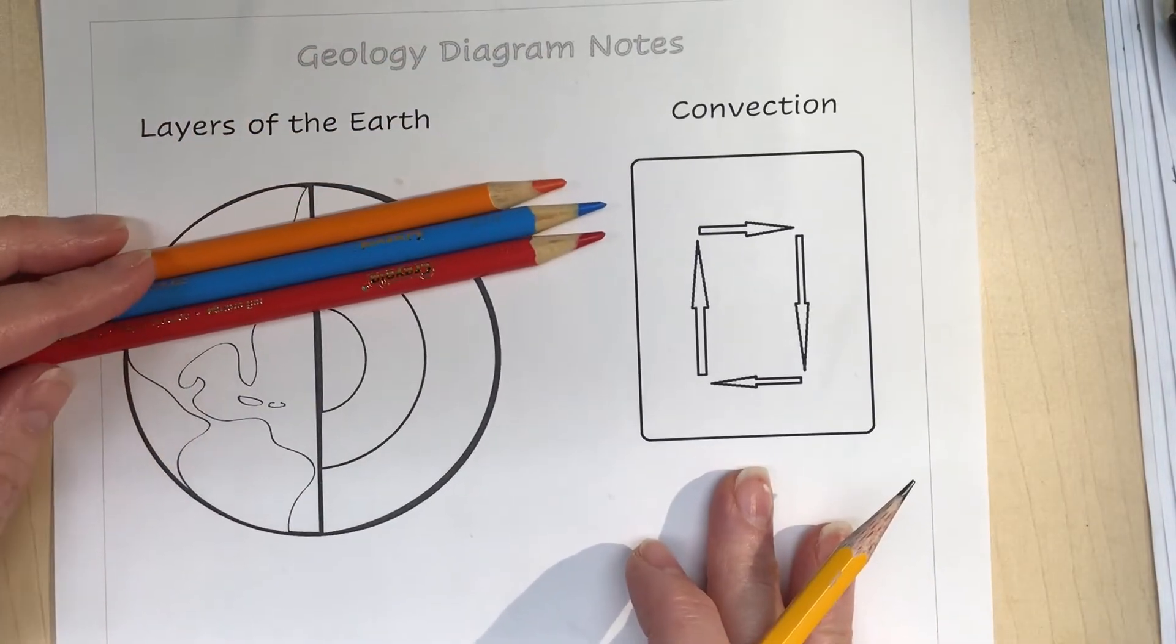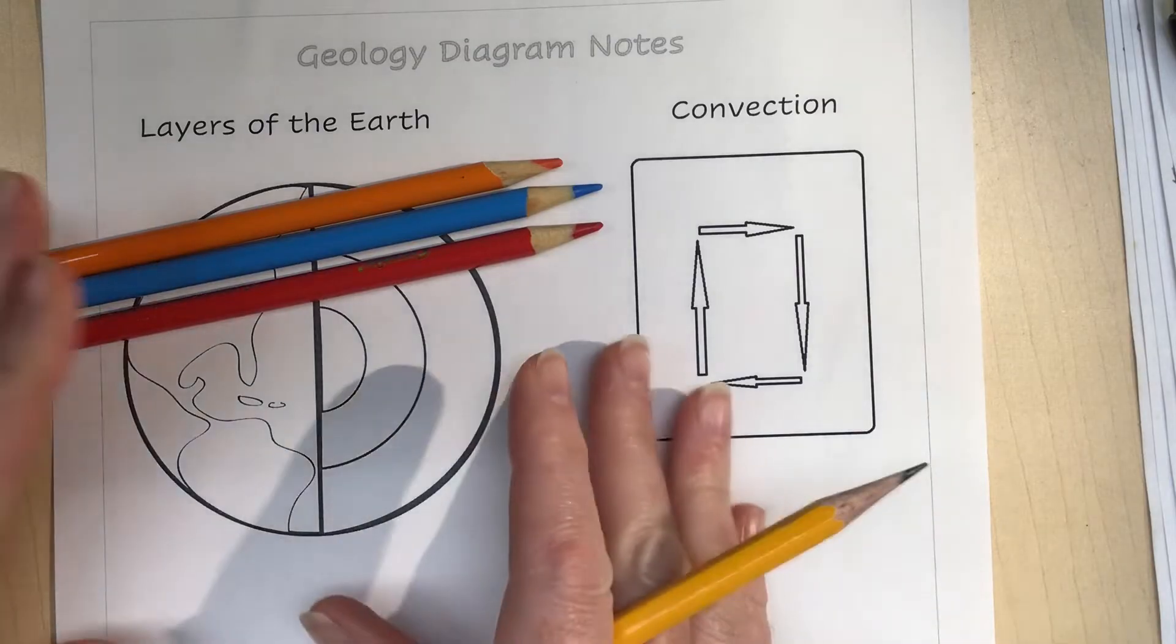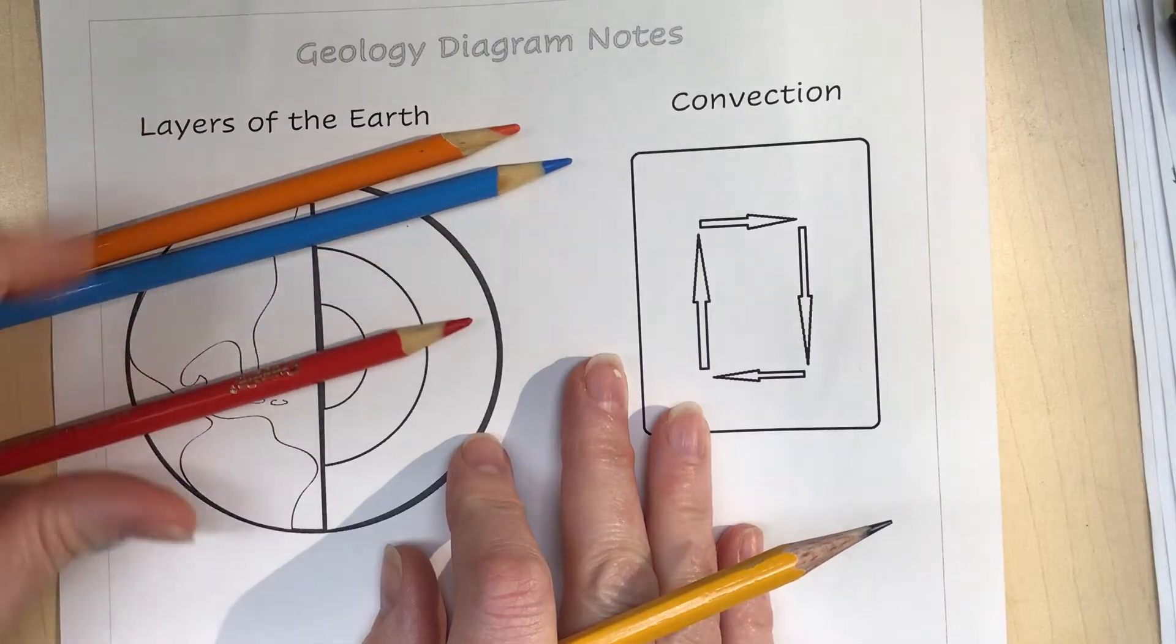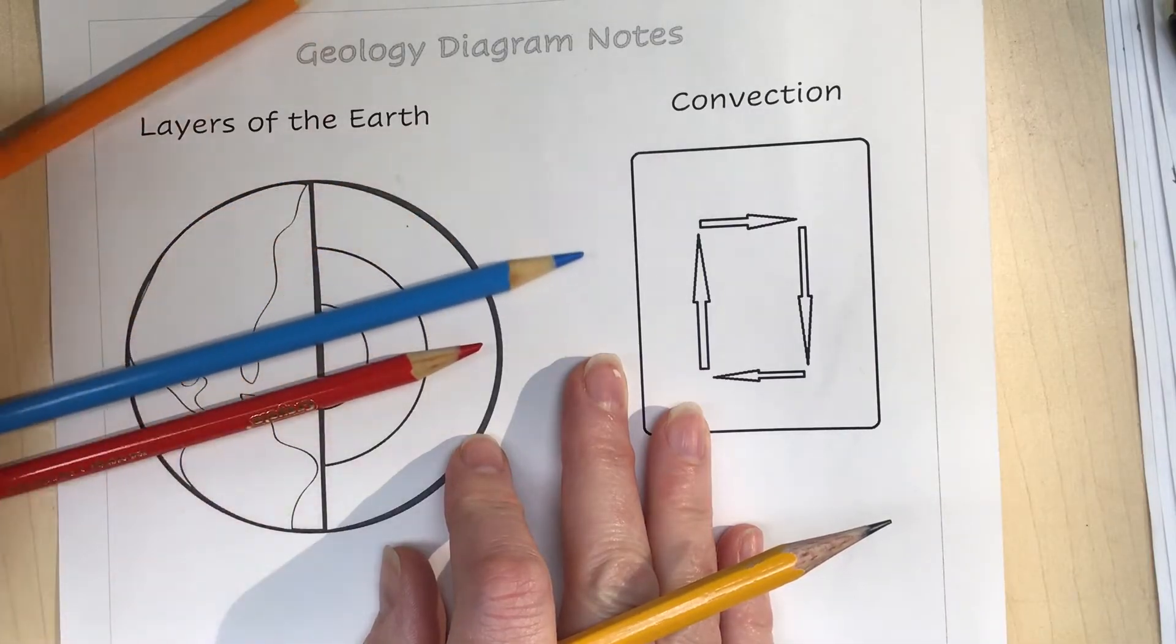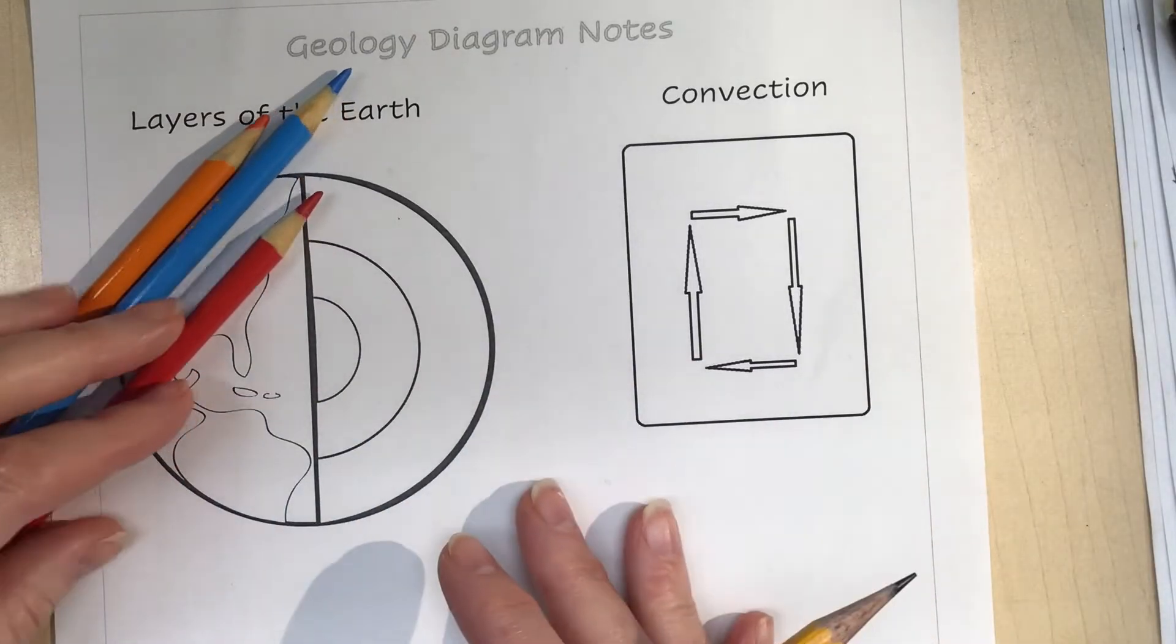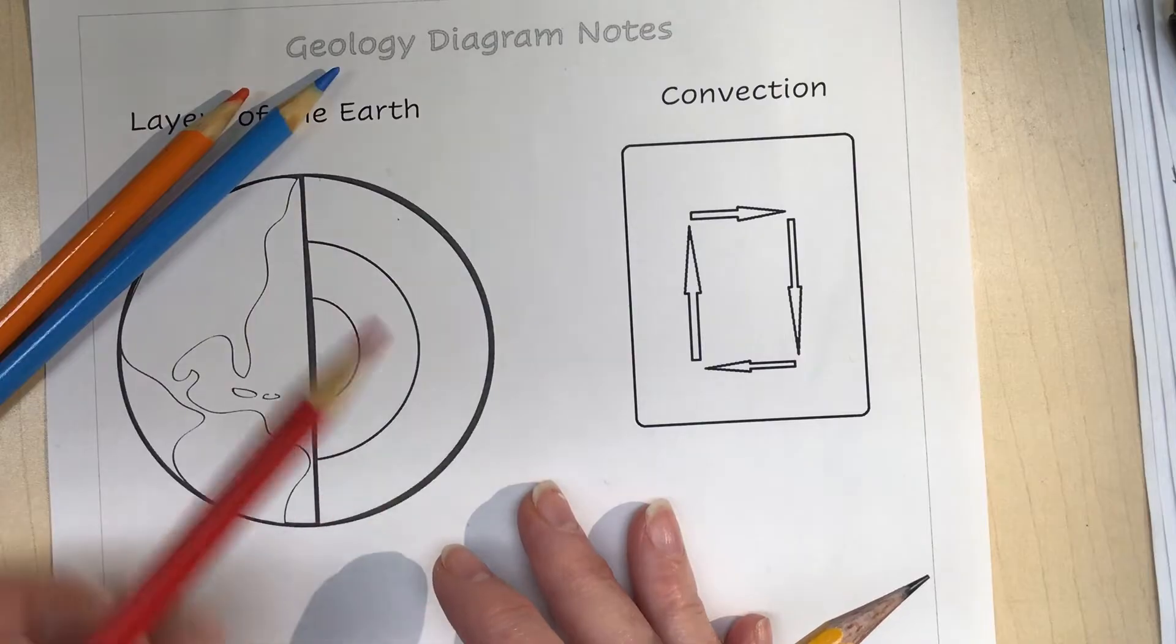Let's get started on the geology diagram notes. For these notes it's helpful to have some colors with you - some warm colors like red or orange, some cool colors like blue. You can use crayons, colored pencils, markers, or highlighters like a pink highlighter instead of a red pencil.